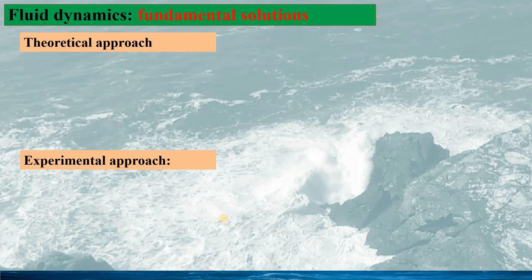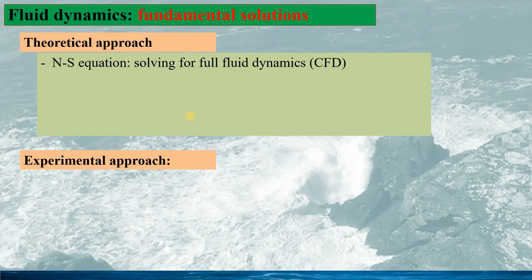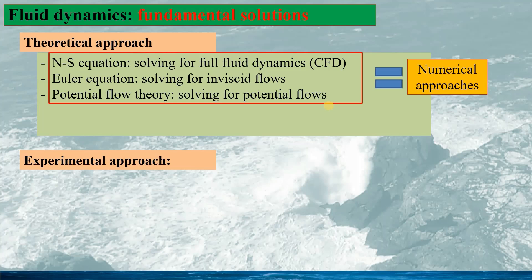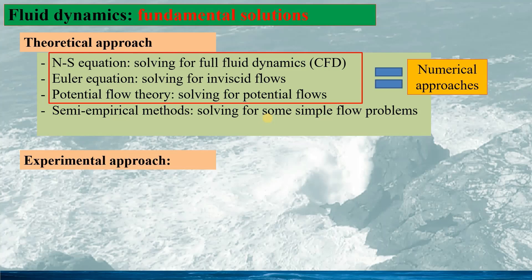In fluid dynamics, generally we have two different approaches: the theoretical approach and the experimental approach. In the theoretical approach, we might need to solve the Navier-Stokes equation for full fluid dynamics, such as CFD, or we might solve the Euler equation for inviscid flows, or we might solve the potential flow problem if we can assume the flows are potential. All three approaches can be taken as numerical approaches, since we solve the fluid dynamics problems using computers. We may also have a semi-empirical method for some specific simple flow problems, and analytic solutions, for instance, for very simple laminar flows.